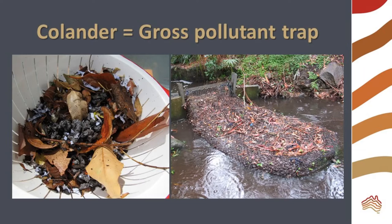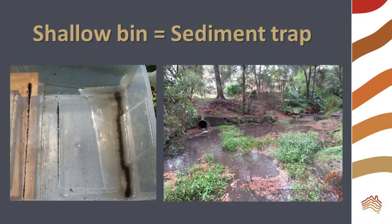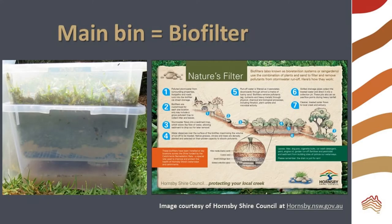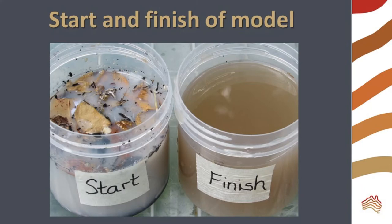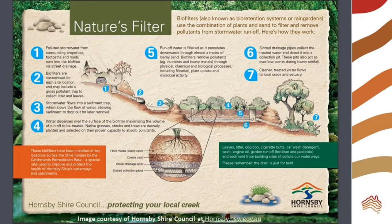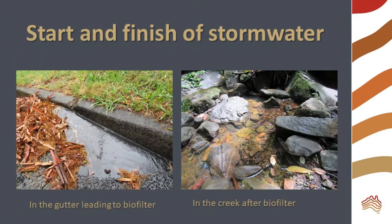Our colander represented the gross pollutant trap. It removed large items like leaves and twigs and a lot of cat litter too. The shallow bin acts as a sediment trap, allowing soil and sand to settle out. The water that has filtered through our biofilter is brown in color because it's freshly built. A mature biofilter with deep-rooted plants will yield much cleaner water. You'll note that the white from the milk has been filtered out, as have the solid pollutants. Biofilters are an effective way to remove dissolved pollutants. Scummy leaf and litter filled water is naturally filtered into clean creek water using stormwater treatment.